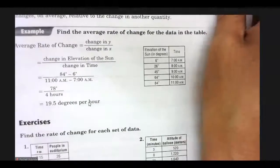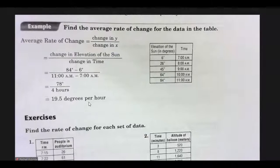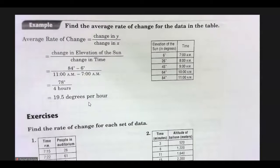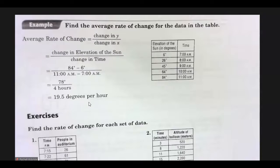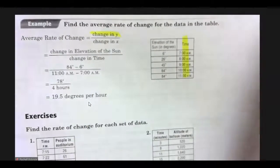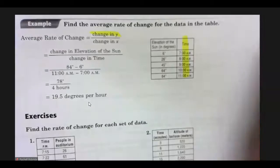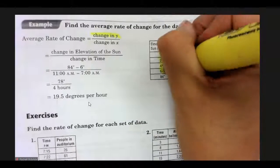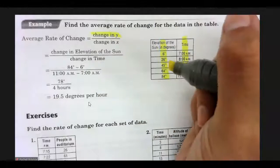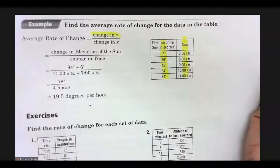So the areas I think that gave us the most trouble were tables. So I want to just review finding the average rate of change of a table. Remember, rate of change is change in y over change in x.